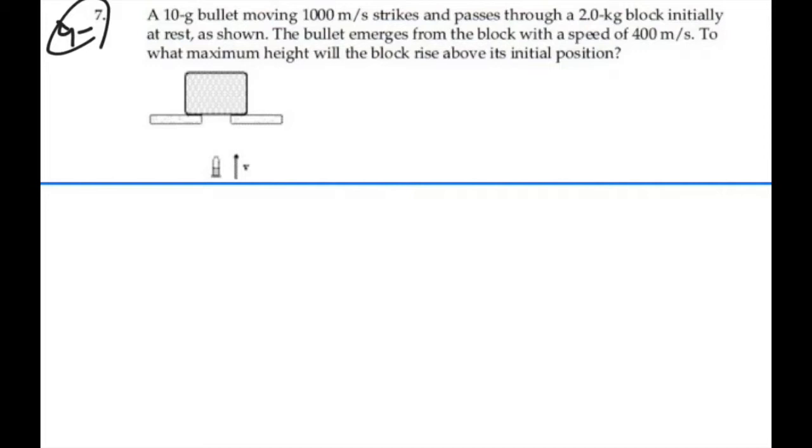So we have this initial situation with a bullet moving with an initial velocity, let's call it V1 initial, of 1,000 meters per second. Mass 2 is the 2 kilogram block, and it has initial velocity of zero. It's at rest. Mass 1 being a 10 gram bullet, so that's going to be 0.01 kilograms for the mass. So this is the way things look like initially.